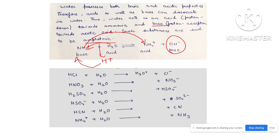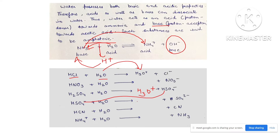Similarly, HCl reacting with water converts into H3O positive and Cl negative. H2NO3, which is nitric acid, gives H3O positive and NO3 negative. H2SO4 in the first step gives H3O positive and HSO4 negative. Then HSO4 reacts with water again to give H3O positive and SO4 2 negative. Since H2SO4 dissociates in two steps, it is known as a diprotic acid.